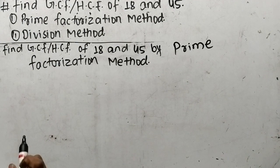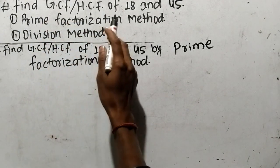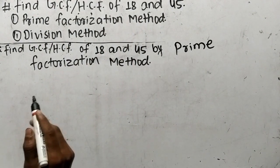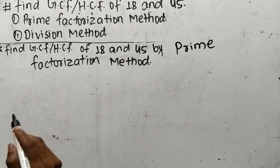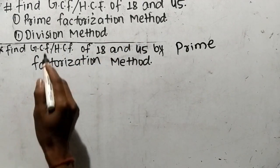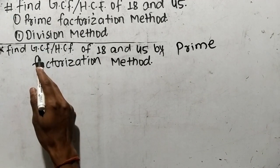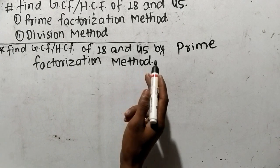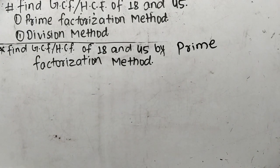Today in this video we shall learn to find the GCF or HCF of 18 and 45. We shall find out the GCF or HCF by two methods: first by prime factorization method, and second by division method. So let's find out the GCF or HCF of 18 and 45 by prime factorization method.